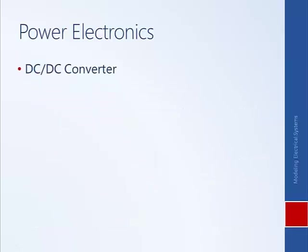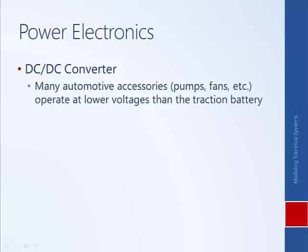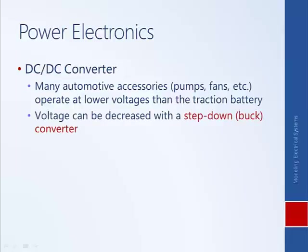Another application of where a DC to DC converter could be used is to enable low voltage appliances like pumps and fans to be driven by a high voltage battery — the battery used for driving the traction motor in an electric vehicle. Since the accessories are very low voltage and the traction battery is very high voltage, we need what we call a step-down or buck converter in order to lower the voltage.